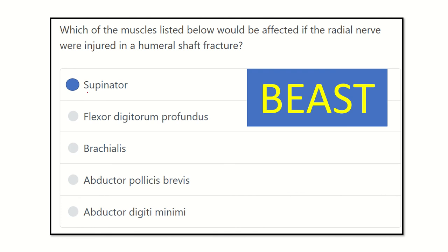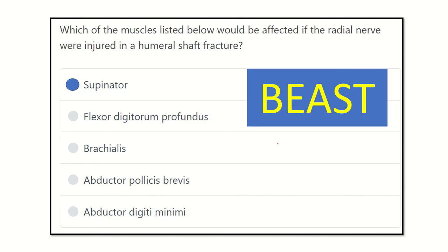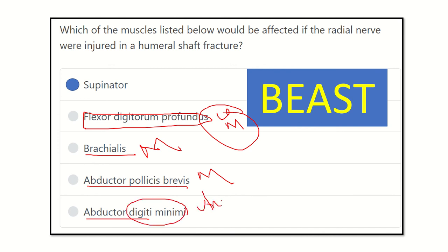Finally, we can say the answer is supinator, because supinator is a forearm muscle — it lies in the forearm and would be affected. Brachialis is supplied by the musculocutaneous nerve. Abductor pollicis brevis is supplied by the median nerve. Abductor digiti minimi is supplied by the ulnar nerve. So our final answer is supinator muscle.